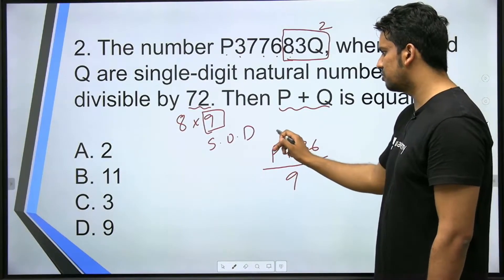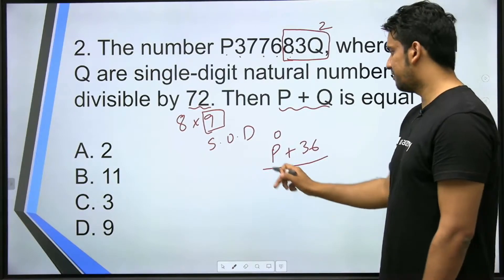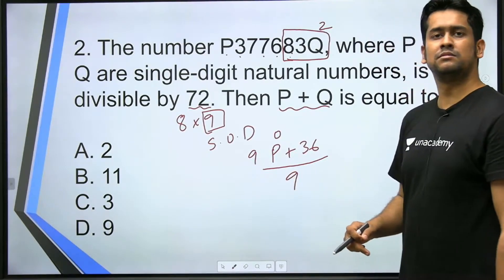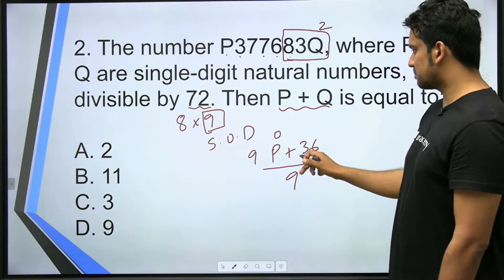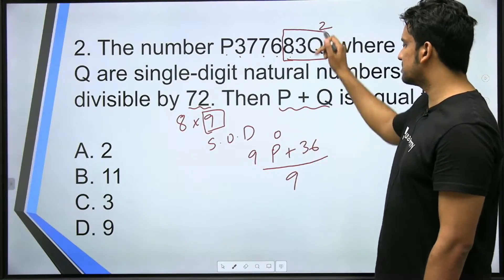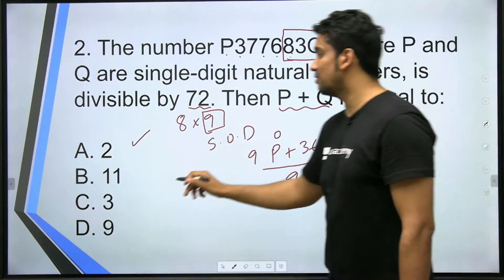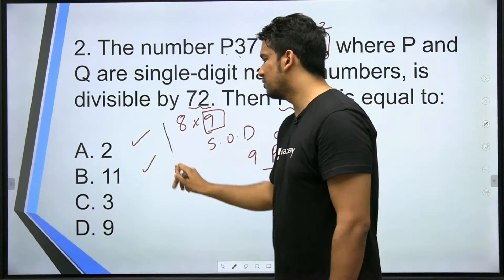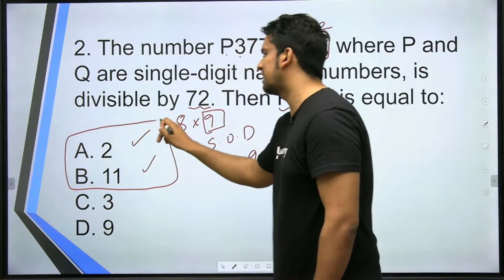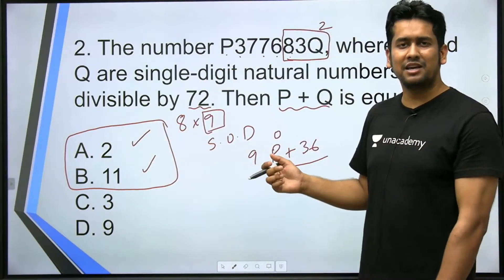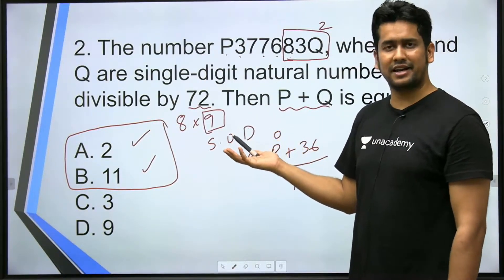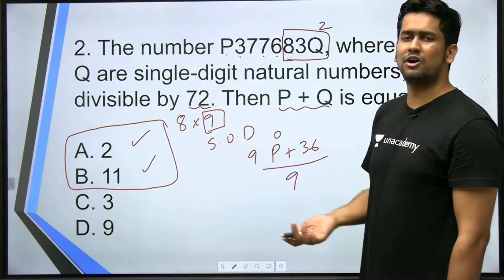So P plus 36 should be divisible by 9. When can this happen? Either P itself is 0, or P itself is 9. In this case, if P is 0 then P plus Q's value will be 2. And if P is 9 then P plus 2's value will be 11. So in this question, both the options are correct. This doesn't happen in CAT. In options, only one correct option exists. But in this question, both options are correct.